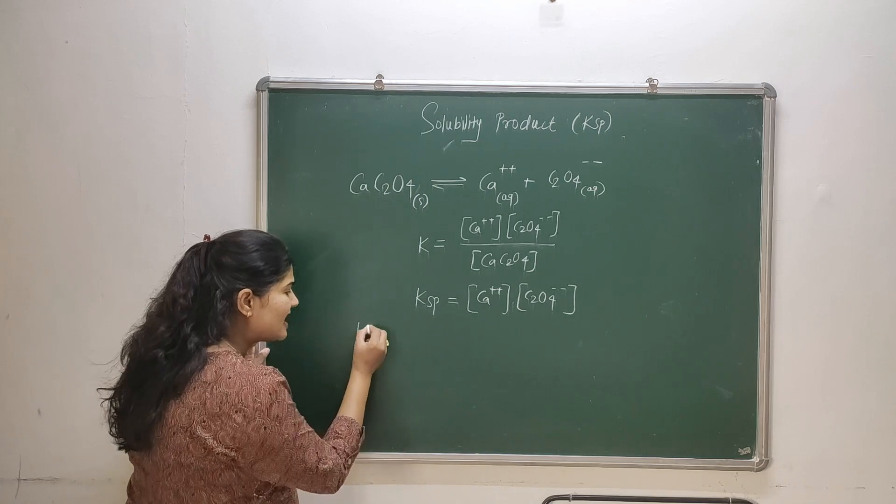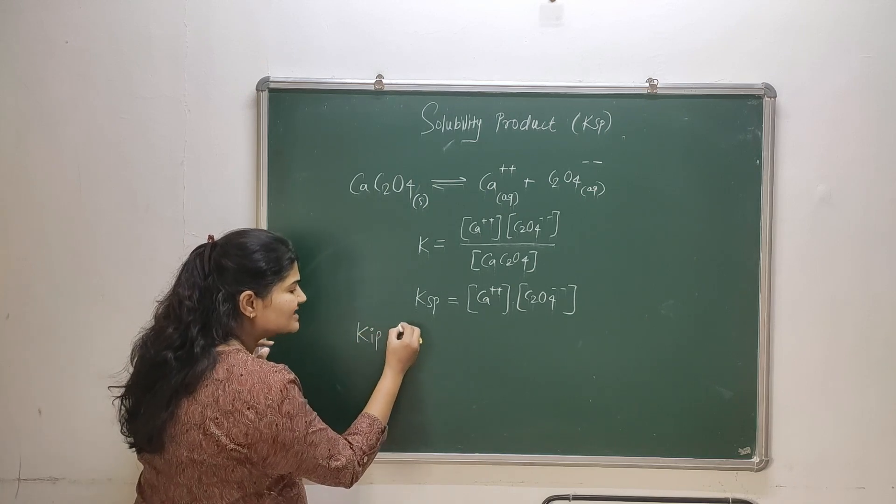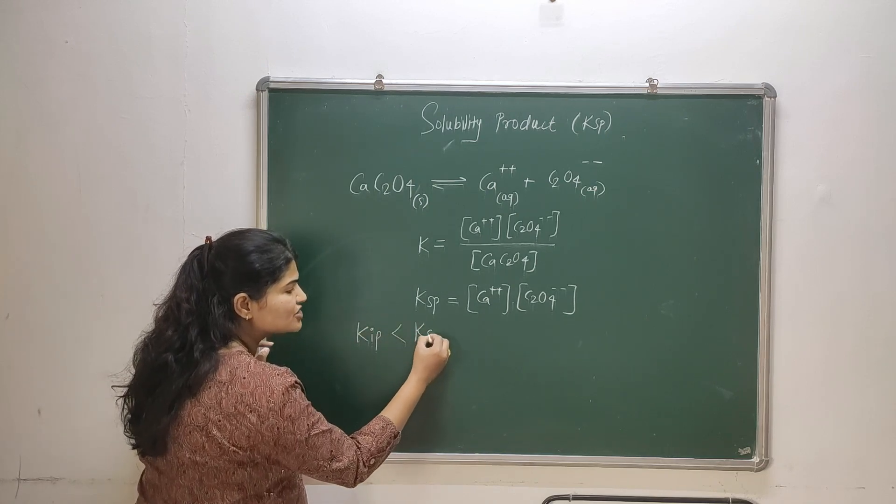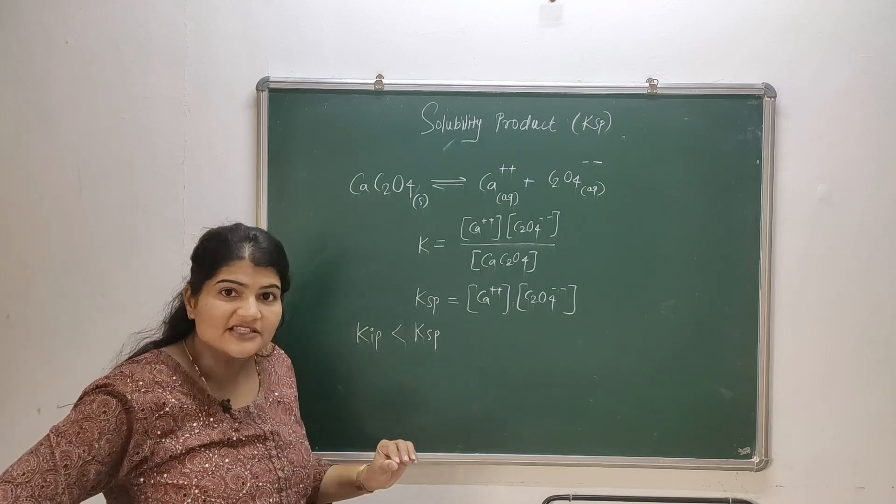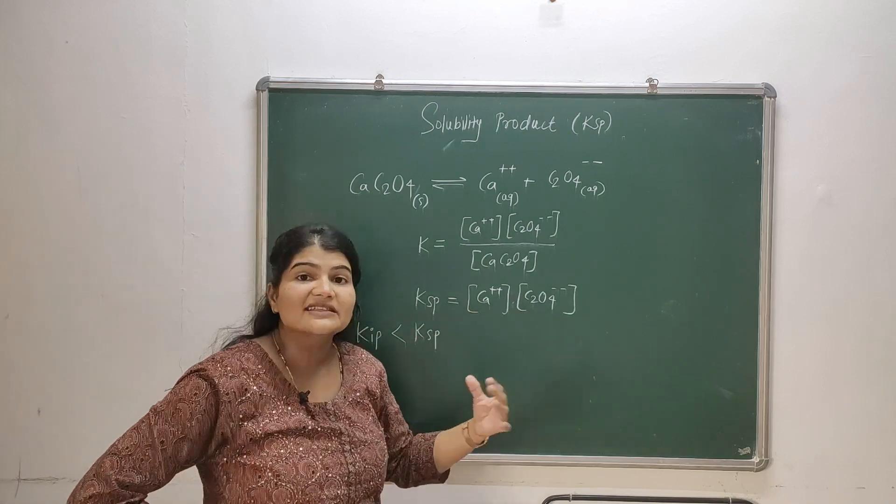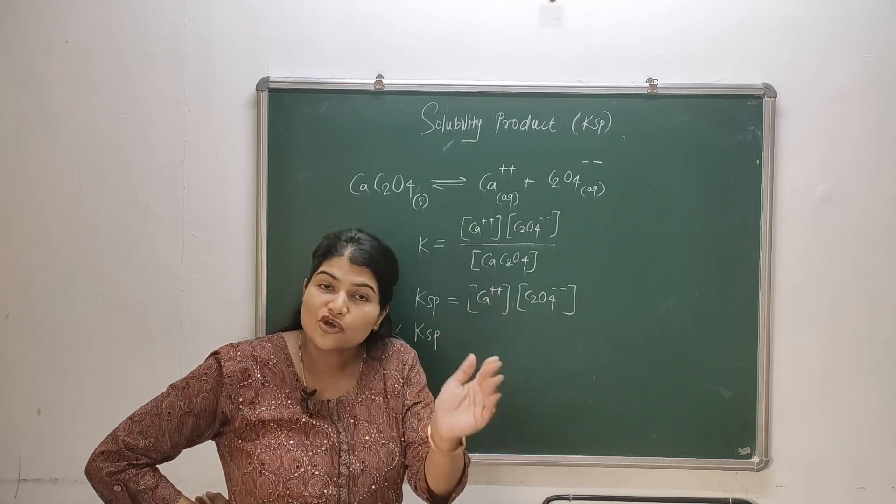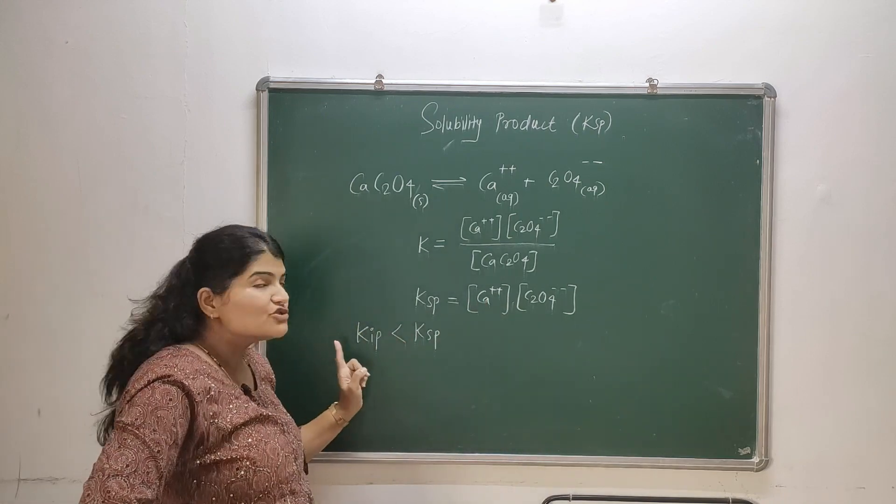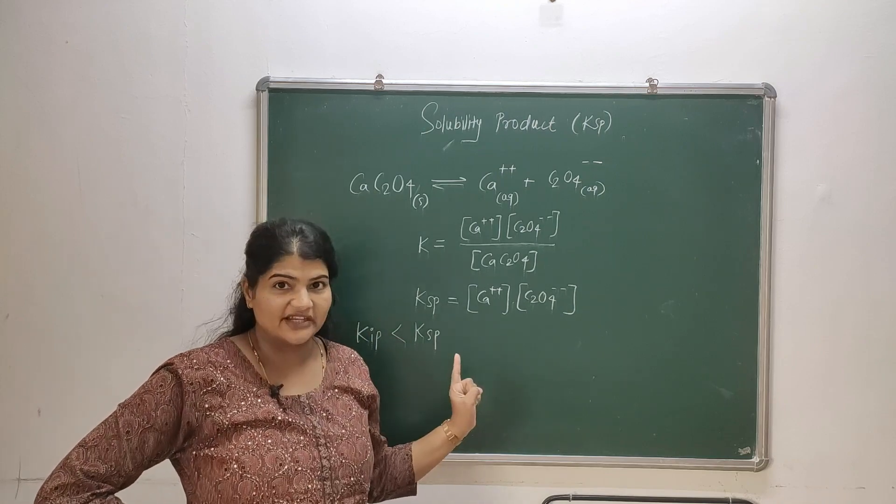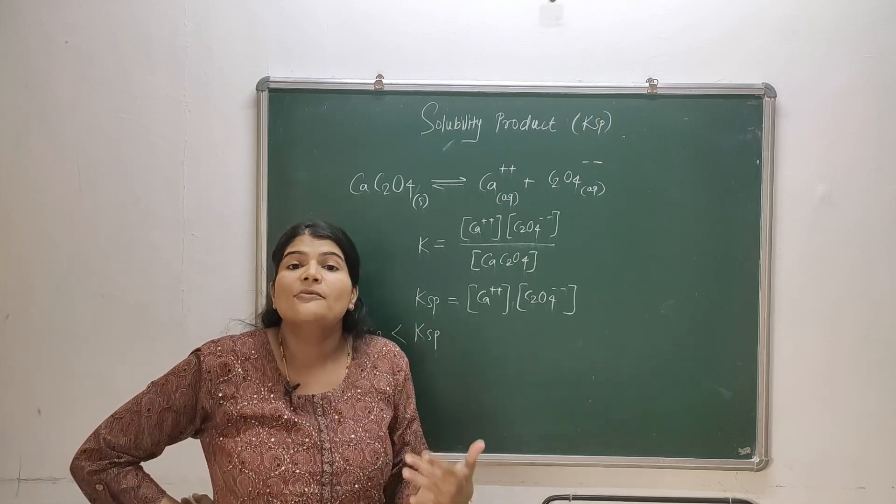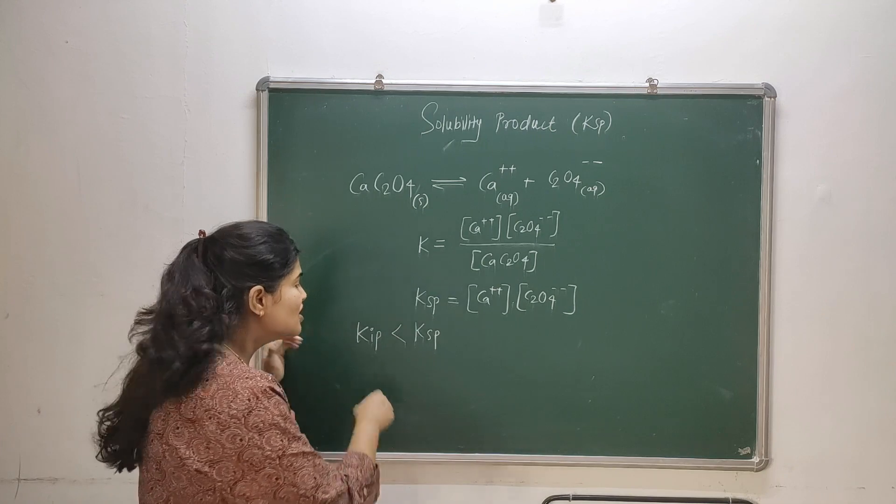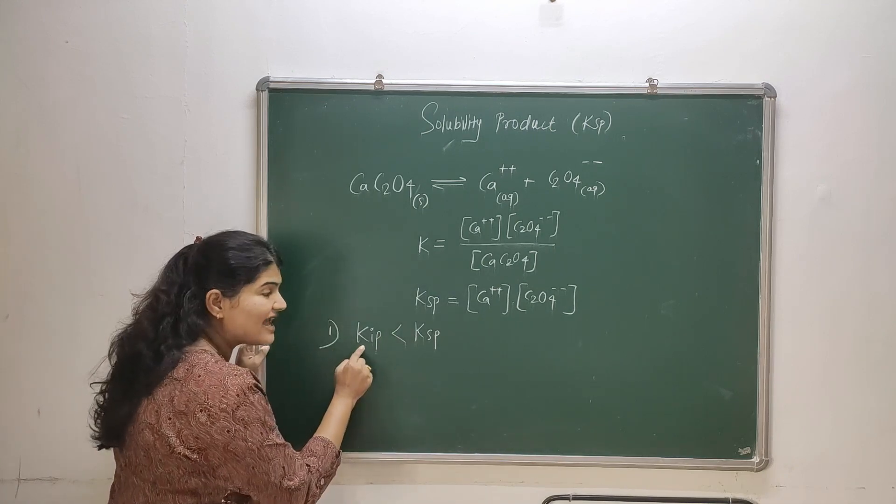Now how this concept can help us predict the precipitation? So if my ionic product is less than the solubility product, it means more number of ions can still be accommodated in the solvent. It means the solution is unsaturated and there is scope for further dissolution. So in the first case, if Kip is less than Ksp, the solution is unsaturated and we can dissolve more solute into it.